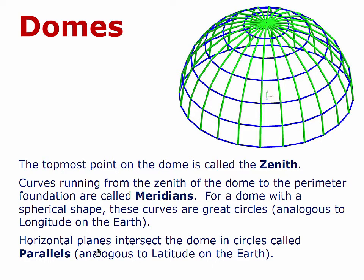Horizontal planes intersect the dome in circles that are called parallels. In this particular example, the bottom circle is a great circle because the shape we chose to generate is a hemisphere. The other horizontal intersection circles are called small circles. We sometimes refer to certain types of domes — network domes — as being small circle domes. The parallels are analogous to latitude on the earth.